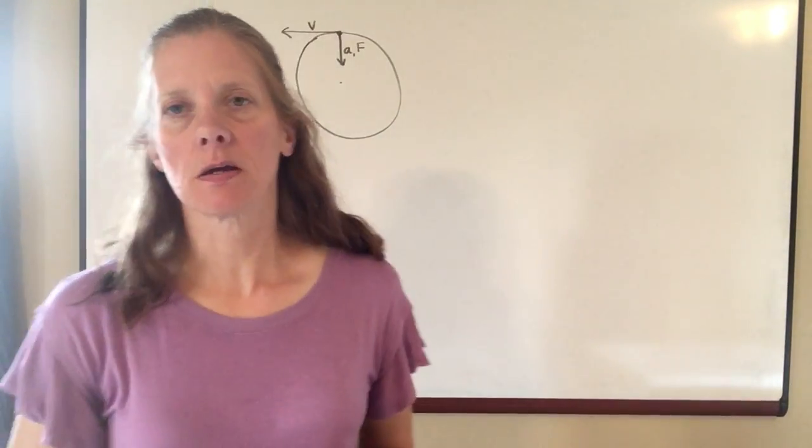In this module we're talking about uniform circular motion, and basically what that means is that you have an object that is moving in a circle and it is moving at a constant speed.